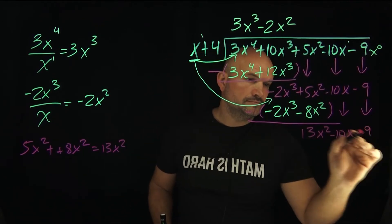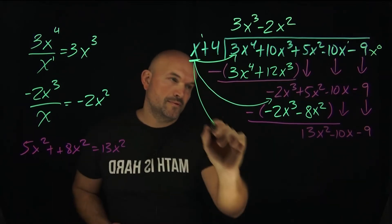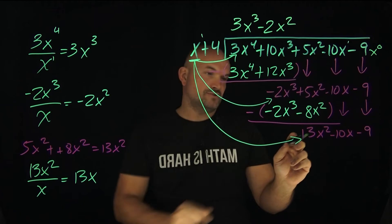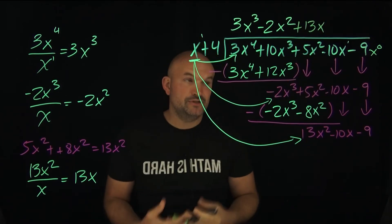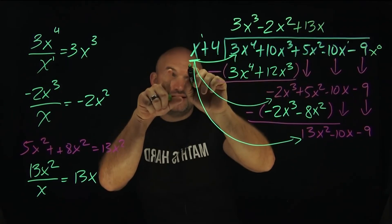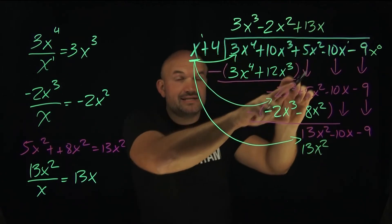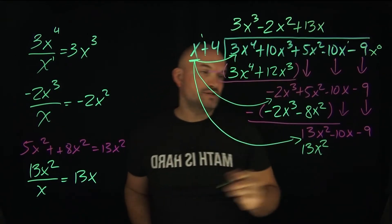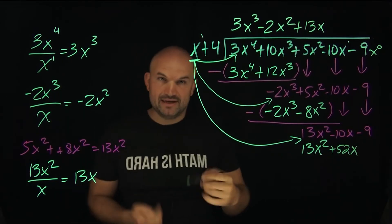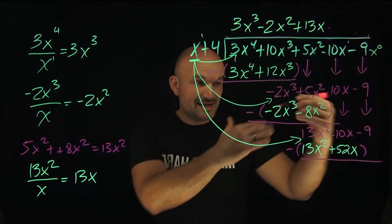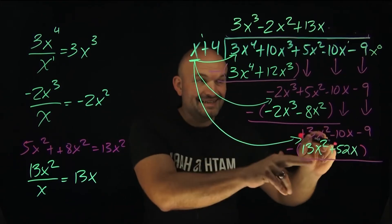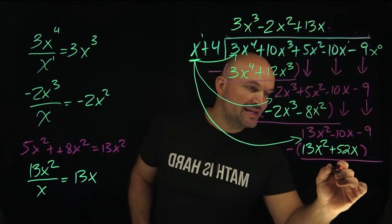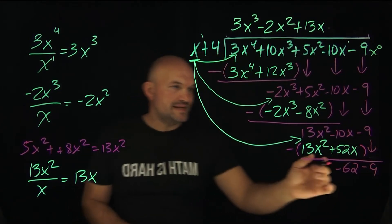We do the same process again. How many times does x divide into 13x squared? That gives us positive 13x — our next quotient term. 13x times x is 13x squared, and 13x times 4: 13 times 4 is 52, so positive 52x. Subtracting the rows: 13x squared minus 13x squared is 0. Then negative 10x minus negative 52x — you owe $10, borrow 52 more, so you now owe $62 — giving negative 62x. Bring down the negative 9 constant. Don't forget that x term.